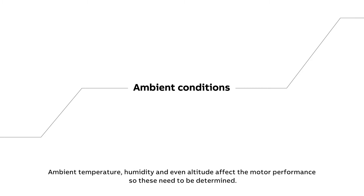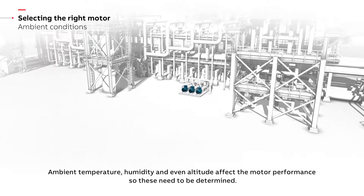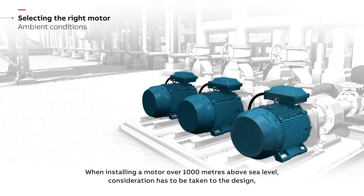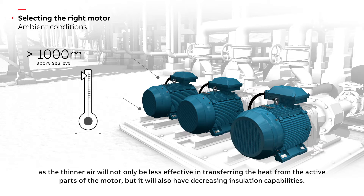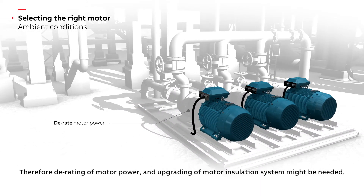Ambient temperature, humidity, and even altitude affect the motor performance, so these need to be determined. When installing a motor over 1,000 meters above sea level, consideration has to be taken to the design, as the thinner air will not only be less effective in transferring heat from the active part of the motor, but will also have decreasing insulation capabilities. Therefore, derating of motor power and upgrading of the motor insulation system might be needed.